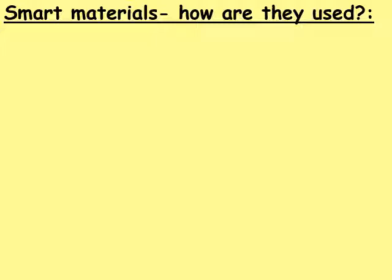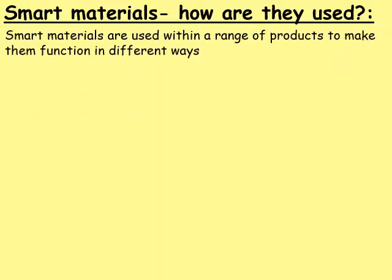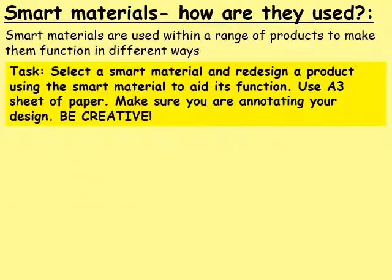What I'd like to do now is leave you with a task, which you can do on your blank paper with a pencil — you can colour it and add annotations, which would be really useful. A quick recap: smart materials are used within a range of products to make them function in different ways, and it is about the function and how they work which is really important. Select a smart material we've discussed today or one from further research, and redesign a product using that smart material to aid its function. Don't worry if you haven't got A3 paper — just use blank paper and try to be as creative as you can and have fun with it.